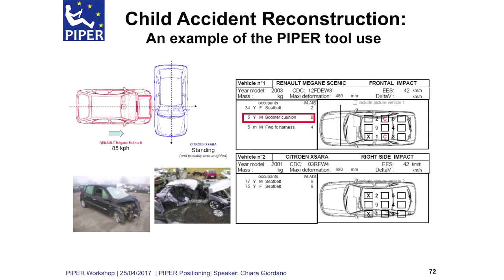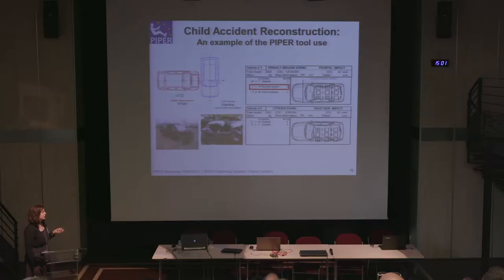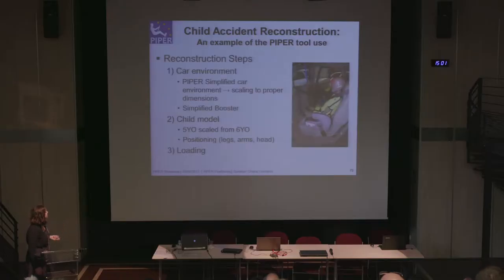Here, briefly, the dynamic of the accident: we have a Megane Scenic running into a standing Citroën Xara at a speed of around 85 km/h. The two children were sitting in the rear of the car — a five-month-old child and a five-year-old child. We are looking at the five-year-old child sitting on the right-side rear seat of the Megane Scenic.